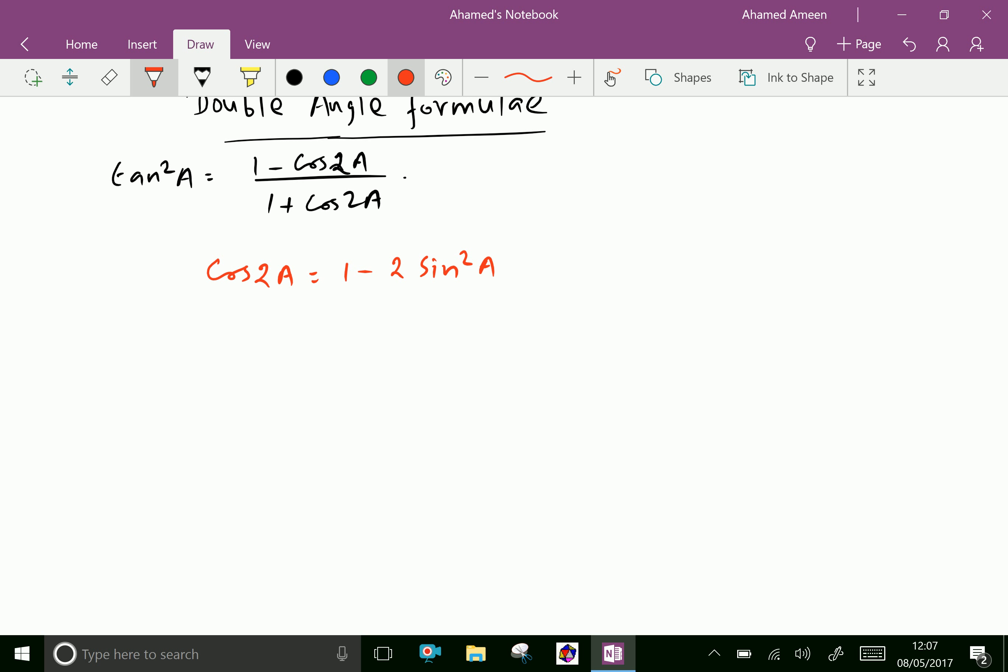From that we can write 2 sin squared A equals 1 minus cos 2A, and therefore sin squared A equals 1 minus cos 2A over 2.